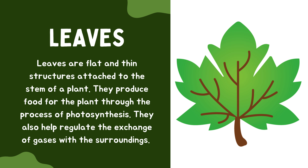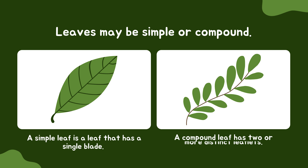Leaves. Leaves are flat and thin structures attached to the stem of a plant. They produce food for the plant through the process of photosynthesis. They also help regulate the exchange of gases with the surroundings. Leaves may be simple or compound. A simple leaf has a single blade. A compound leaf has two or more distinct leaflets.